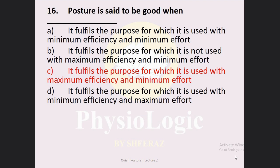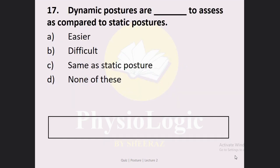It fulfills the purpose for which it is used with maximum efficiency and minimum effort. When we talk about bad posture, the definition will be reversed — it will not fulfill the purpose, or it will fulfill the purpose but with minimum efficiency and maximum or extra effort.